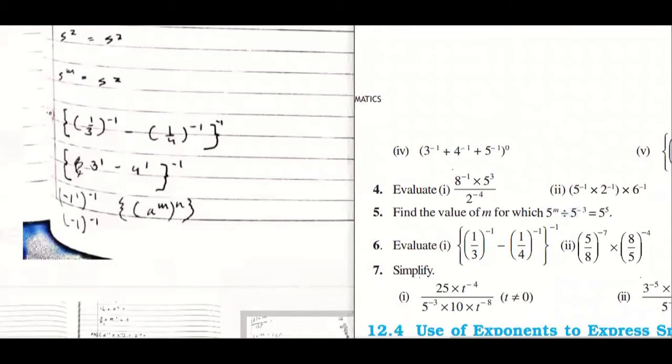So next question is question number 6. We will do the first part: 1 upon 3 power minus 1 minus 1 upon 4 power minus 1, and whole power minus 1. Just like BODMAS, we will open the inner bracket first. We have not written the law: a upon b power minus m equals to b upon a power m. Write it down.